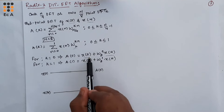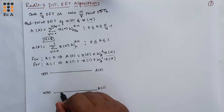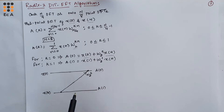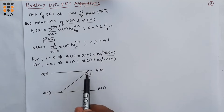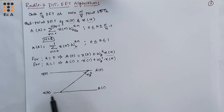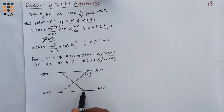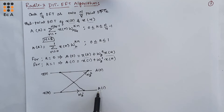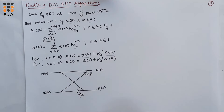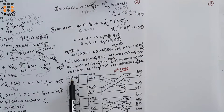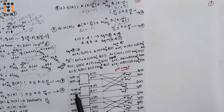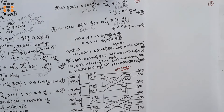Now let us represent the signal flow graph for these equations. We have two input signals x(0) and x(4), and outputs A(0) and A(1). To get A(0), it is x(0) plus W_2^0 times x(4), so we join the line with scaling factor W_2^0. For A(1), the scaling factor is W_2^1. Similarly, you can write it for x(2), x(6), x(1), x(5), x(3), and x(7).